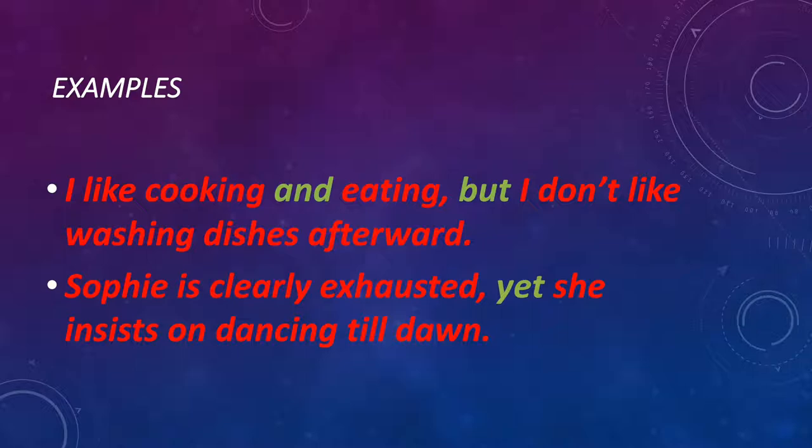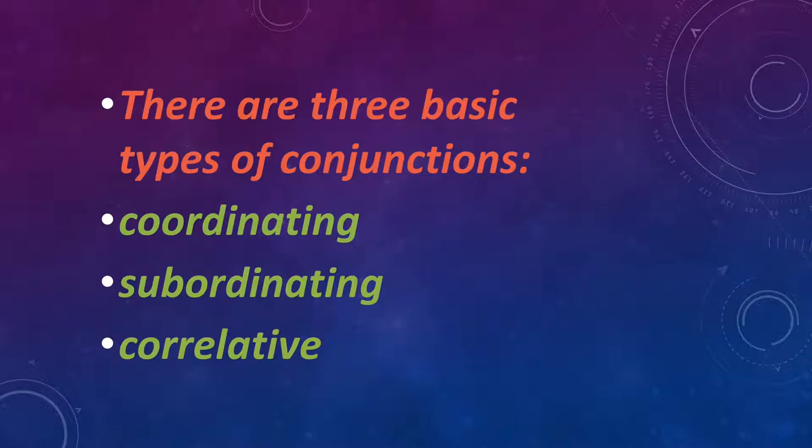Next sentence: Sophie is clearly exhausted, yet she insists on dancing till dawn. In this sentence, the word 'yet' is connecting two different sentences — that is, 'Sophie is clearly exhausted' and 'she insists on dancing till dawn.' Therefore, the word 'yet' is a conjunction.